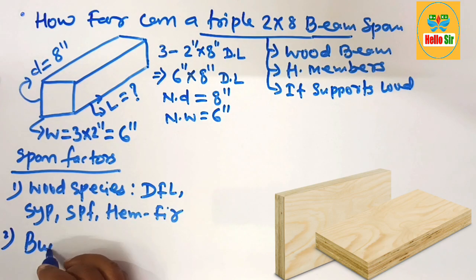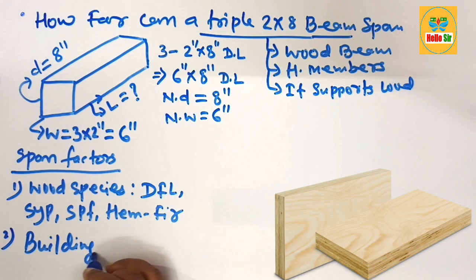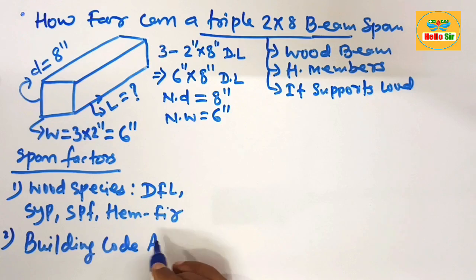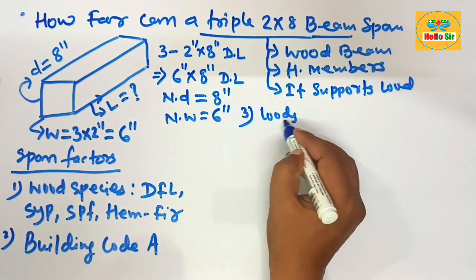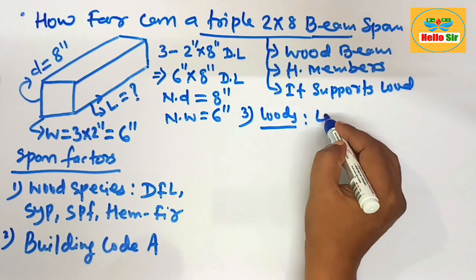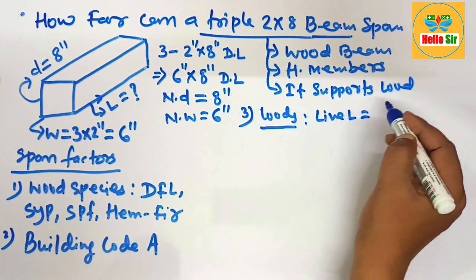And the second major factor is building code in your area. What are the building codes in your area? And the third factor is load condition—what are the dead load and live load?